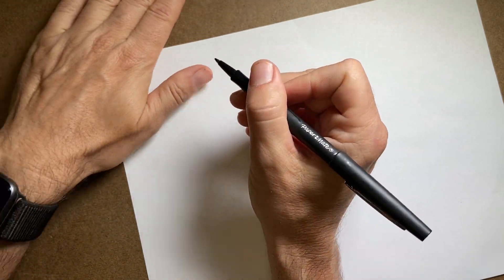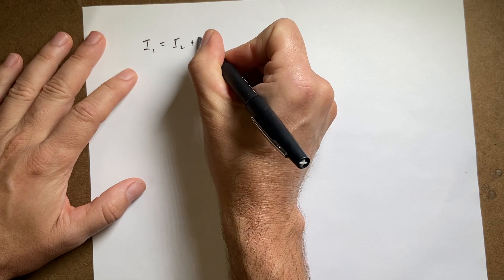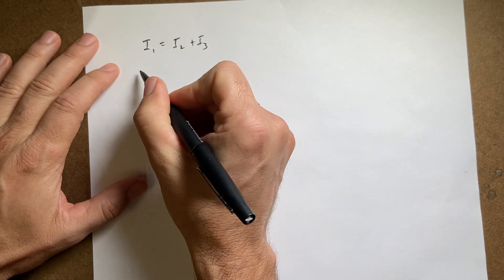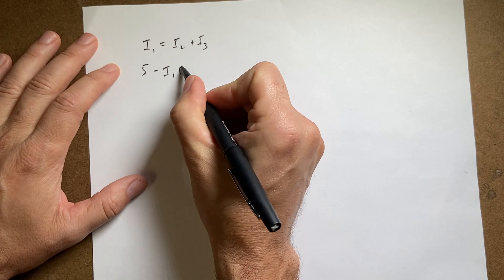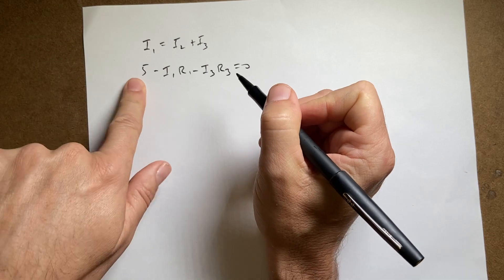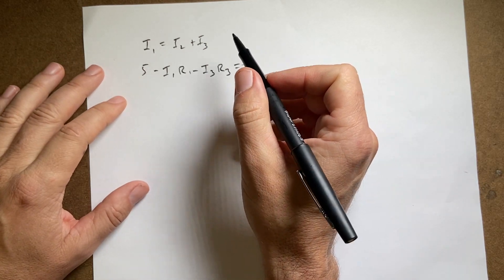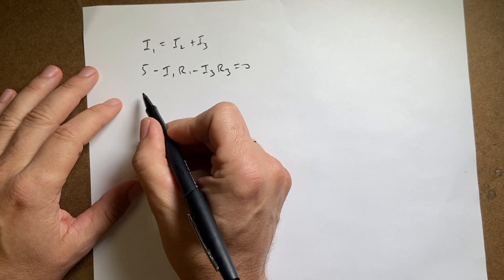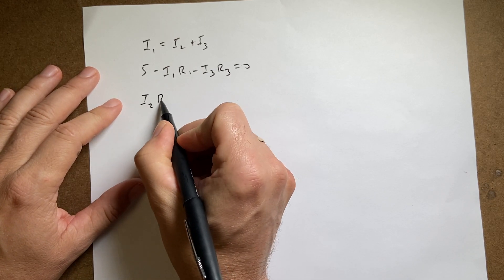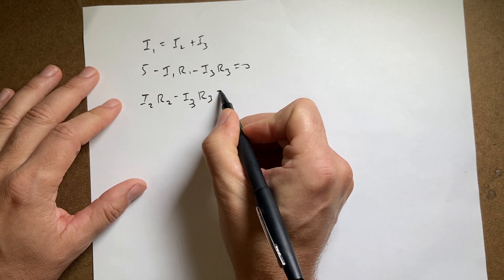Let me just write these three equations again. I1 equals I2 plus I3. And then I have 5 minus I1 R1 minus I3 R3 equals zero. I probably should have put EMF for this but I don't know why I mixed numbers and letters. I have no excuse. I2 R2 minus I3 R3 equals zero.